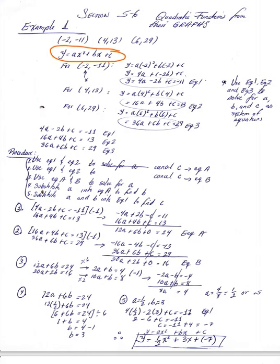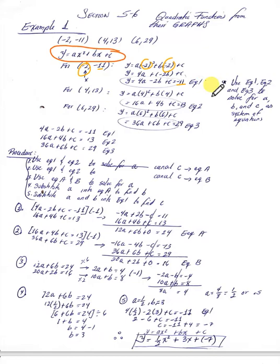For step number one, you take the values of x and y — in this case x is negative 2 and y is negative 11 — and substitute into the general form. You end up with 4a minus 2b plus c equals negative 11. We'll label this as equation number one.